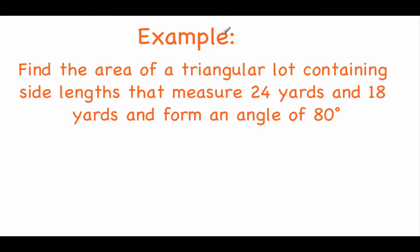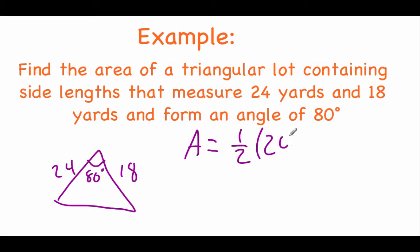Next example says we've got a triangular piece of land. One side is 24 yards long, another side is 18 yards long, and those two sides form an 80 degree angle. We can sketch out a picture just like the last one if we want to. So let's say this side is 24, this side is 18, and the angle between them we're told is 80 degrees. So if we're finding the area of this plot of land, we're going to go one half times the two sides, so 24 and 18.